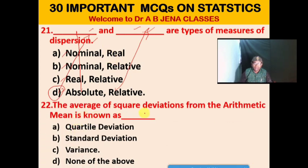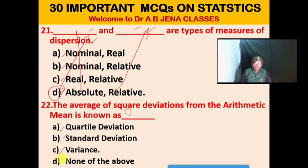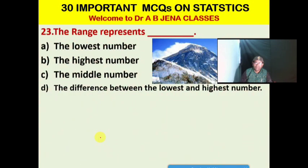Next MCQ: The average of squared deviations from the arithmetic mean is known as what? A. Quartile deviation. B. Standard deviation. C. Variance. D. None of the above. C is the right option. The average of squared deviations from the arithmetic mean is known as variance.